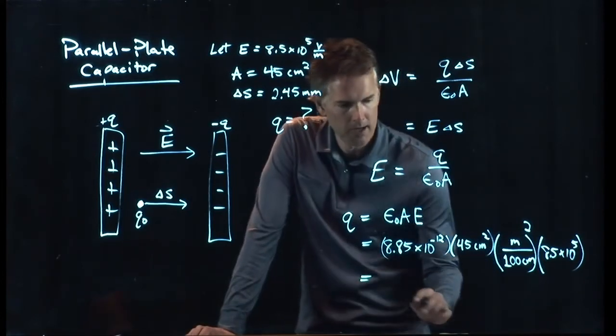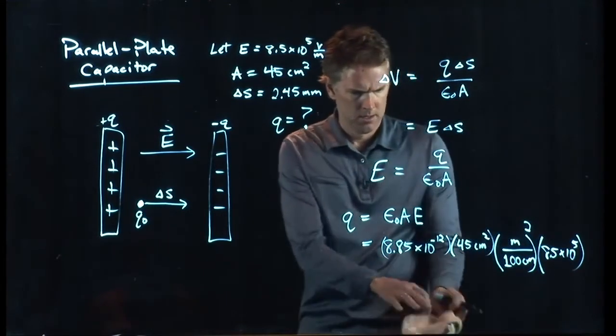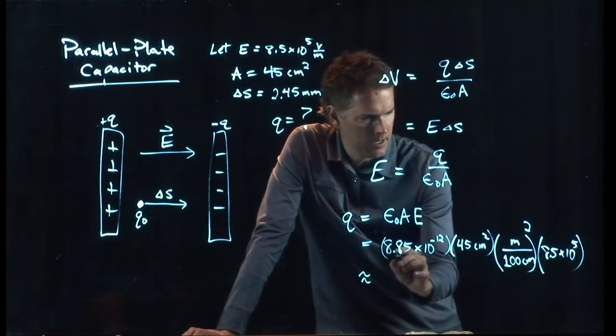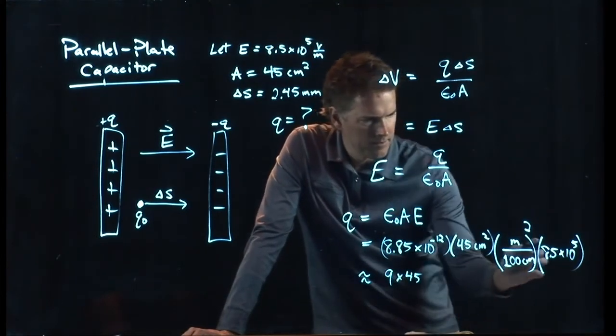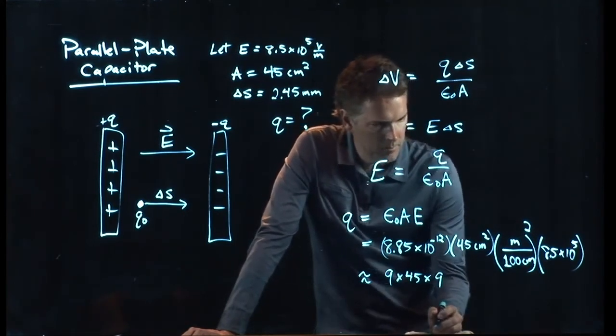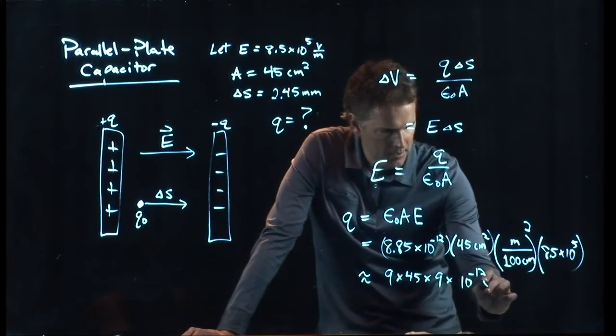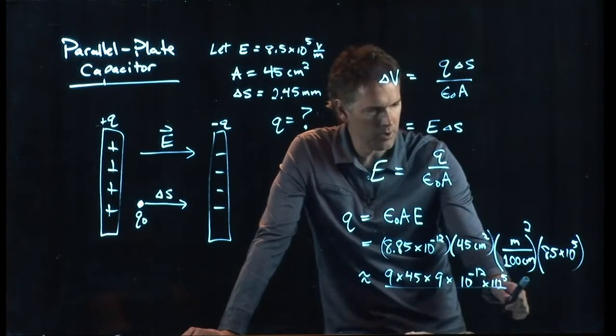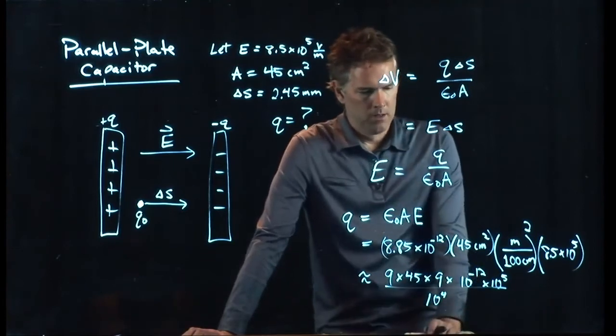And I'll approximate it here if you guys want to punch it in your calculator. So let's see what we got. We got, this is a 9. That's a 45. That's another 9, roughly. And then we've got a 10 to the minus 12. And we've got a 10 to the 5. And down in the bottom, we've got a 100 squared, which is a 10 to the 4. So, let's see.